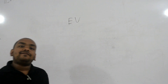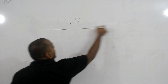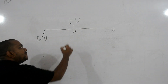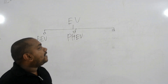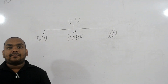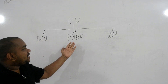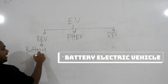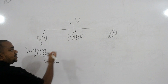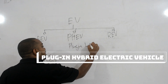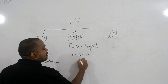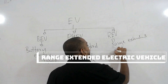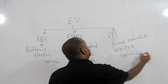Mainly we have three types of electric vehicles. The first is BEV, then we have PHEV, and then we have REV. BEV stands for Battery Electric Vehicle. PHEV stands for Plug-in Hybrid Electric Vehicle. And REV stands for Range Extended Electric Vehicle.